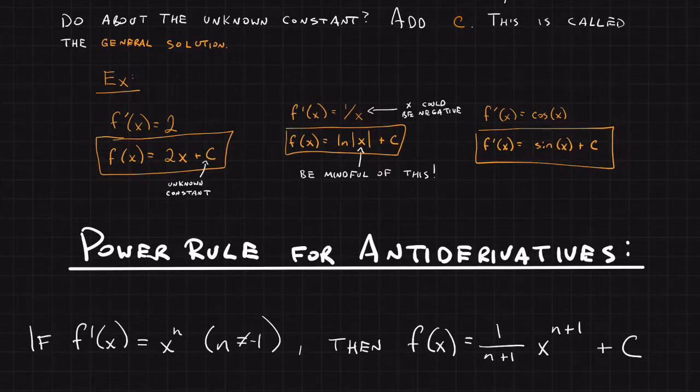If f'(x) = x^n, where n is some constant, and n is not equal to negative 1, then f(x) = 1/(n+1) × x^(n+1) + C.